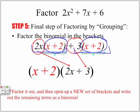We remove the common bracket x plus 2, and whatever is left goes into the next set of brackets. So our final factored form is x plus 2 times 2x plus 3. Whenever we factor trinomials, we get a product of two binomials — and that's exactly what we have here.